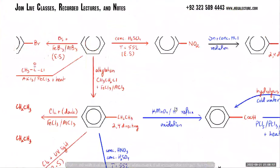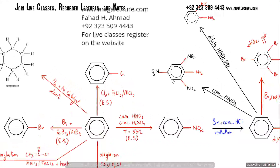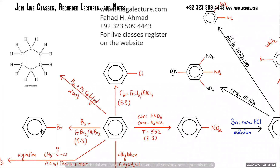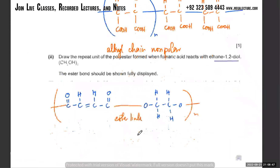If you look at the organic spider chart, there are hardly any reactions where the carbon chain is actually breaking. There are things getting added onto the carbon chain, but the carbon chain itself is not breaking up - it's non-polar, it's very unreactive. Things get added onto it, things get removed from it, but the chain itself does not break.